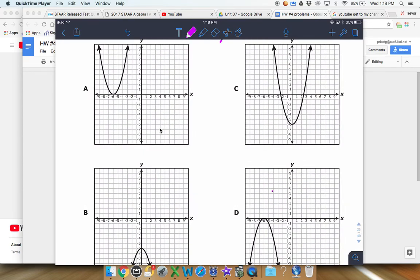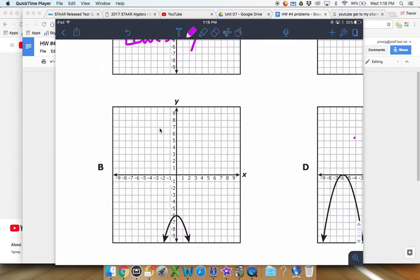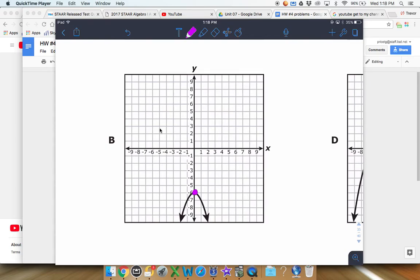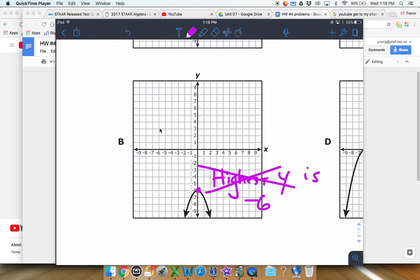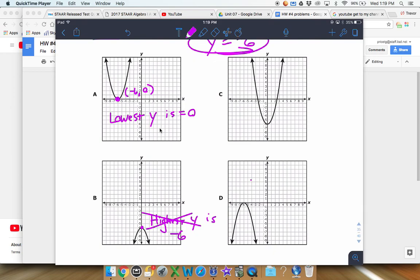We're going to look at all of our options here. Notice, be careful on A - yes, the vertex is at negative 6, but the actual y value for that is negative 6 comma 0. So that means the lowest y is actually zero, so that's obviously not going to be a good option. B, be kind of careful here. The lowest y is actually not 6, that's the highest y. We don't want the highest y, we want the lowest y because the range values need to be greater than or equal to negative 6. That means both ends of the graph need to be opening upward.